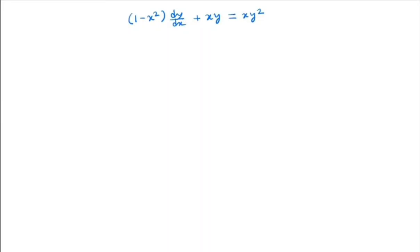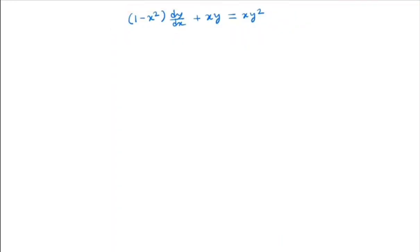Hi everyone, welcome back to my channel. Now, we will try to solve the following ODE: (1 - x²)(dy/dx) + xy = xy². Note that this is Bernoulli's differential equation because here we have a term y and we have a term y squared.